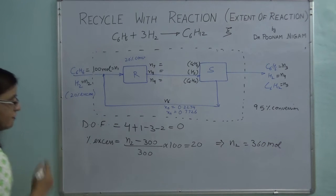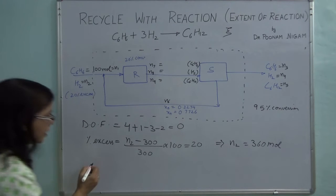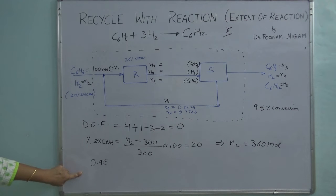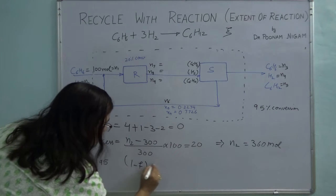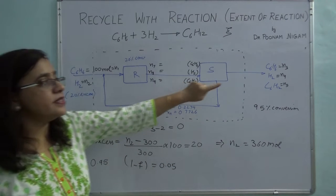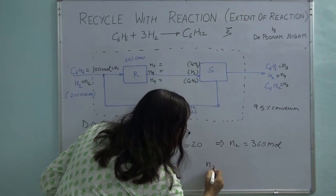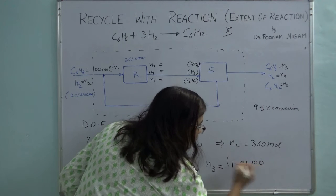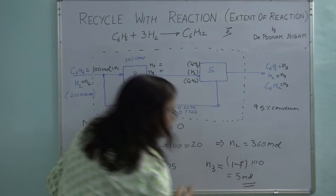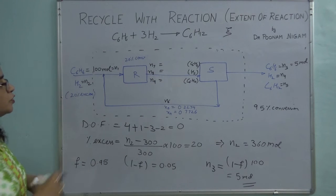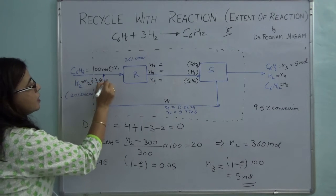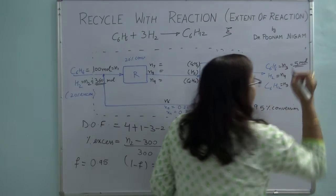Now I will use the second process specification: overall conversion of benzene is 95%. The amount which is unreacted is 5%, so 1 minus F equals 0.05. The unreacted benzene coming out is N3, which equals 100 times 0.05, giving 5 moles. So I have N2 equal to 360 moles, and unreacted benzene coming out equal to 5 moles.